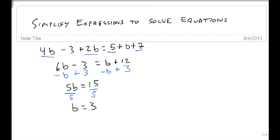But we want to make sure that answer is right, so we plug it back into the original. 4 times 3 minus 3 plus 2 times 3 equals 5 plus 3 plus 7. So on the left, 4 times 3 is 12. Minus 3 plus 2 times 3 is 6. And on the right, I can go straight to adding. 5 plus 3 is 8. 8 plus 7 is 15.